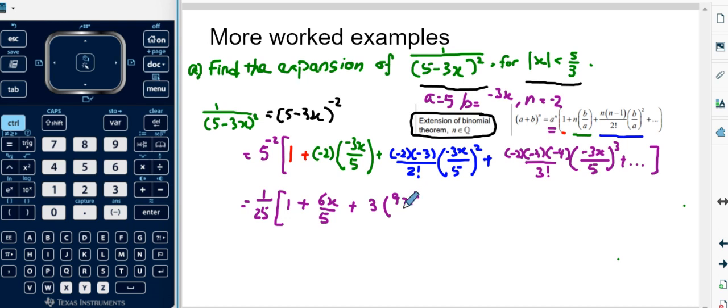9x squared over 25 in the bracket. Plus here now I have negative 6 divided by 3 factorial which is 6, so it cancels out, leaving negative 4 only. And then I have negative 3 to the power of 3, so that is negative 27 x cubed over 5 cubed which is 125 plus dot dot dot.